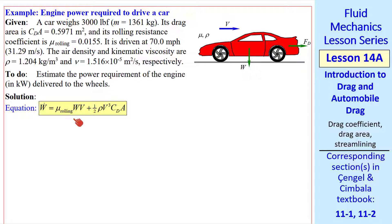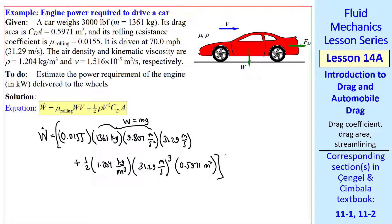This is the equation for total power that I had written before. So we plug in the numbers. Rolling resistance coefficient, weight, which is mg, times V, plus one half rho, V cubed, times drag area. We need some unity conversion factors, newton-second squared per kilogram meter, and kilowatt-second per 1,000 newton meter. We get 17.5 kilowatts. In English units, this is only 23.5 horsepower.